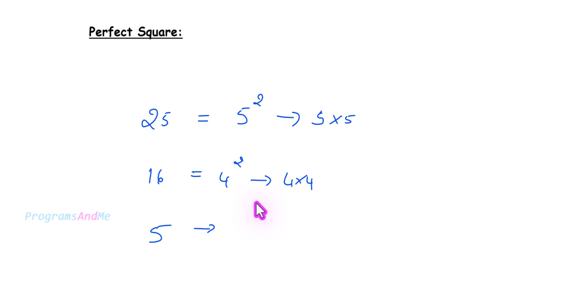For that I will use the square root method. First I will find the square root of the given integer number. If the square root is an integer then the given number is a perfect square. If it is a float with some decimal points, then it is not a perfect square.